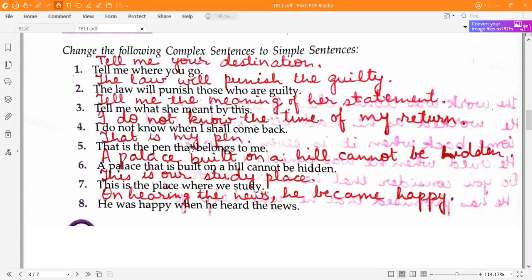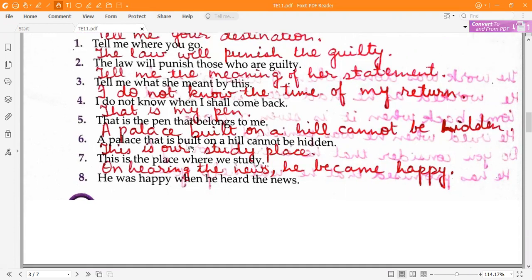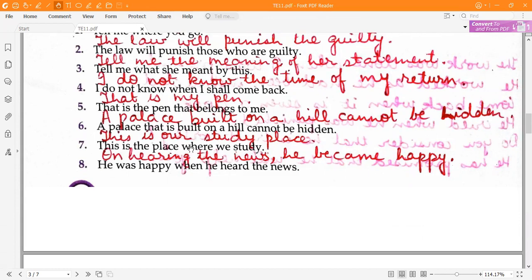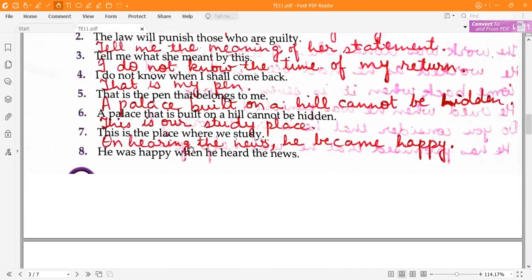Sixth one, a palace that is built on a hill cannot be hidden. A palace built on a hill cannot be hidden. Seventh one, this is the place where we study. This is our study place.